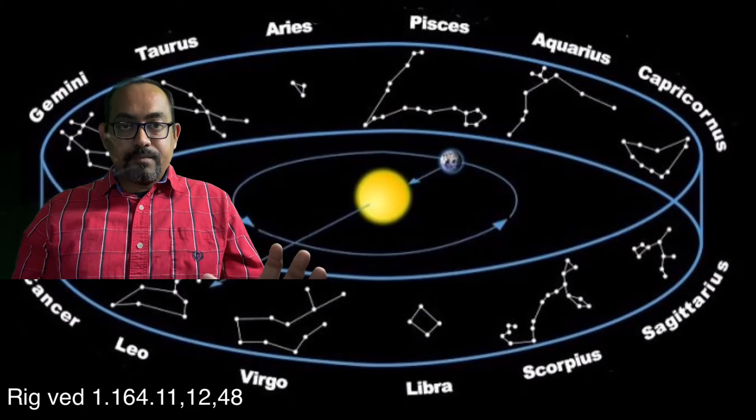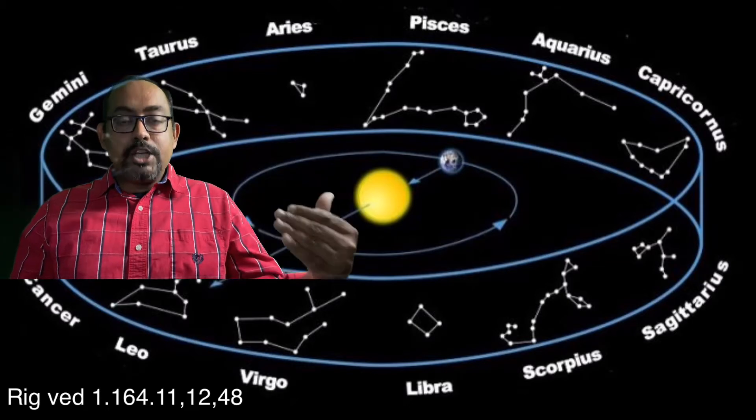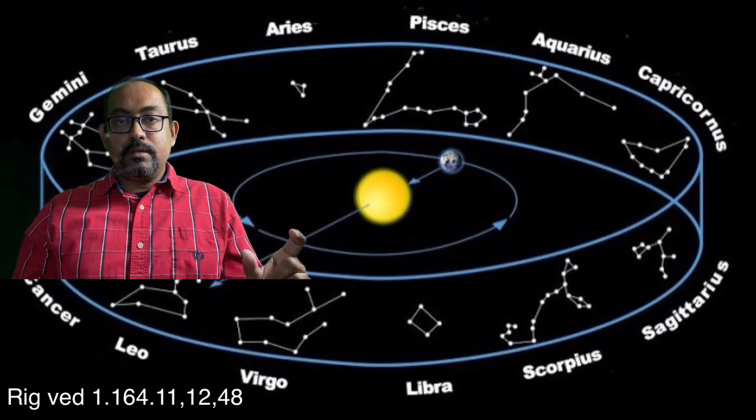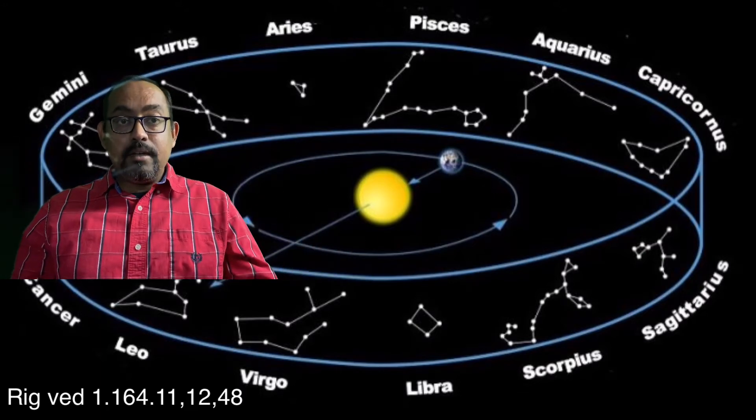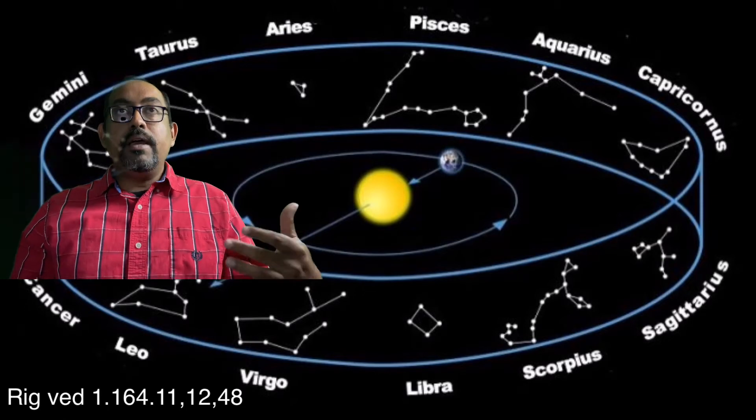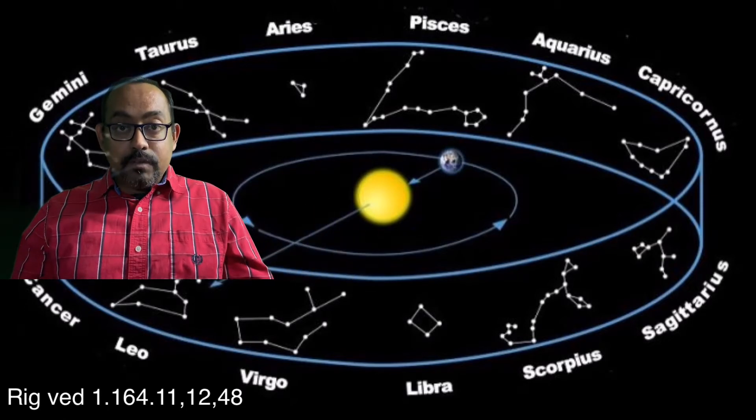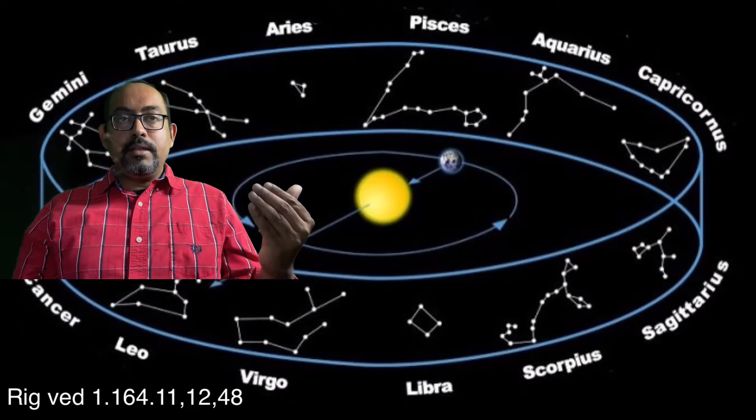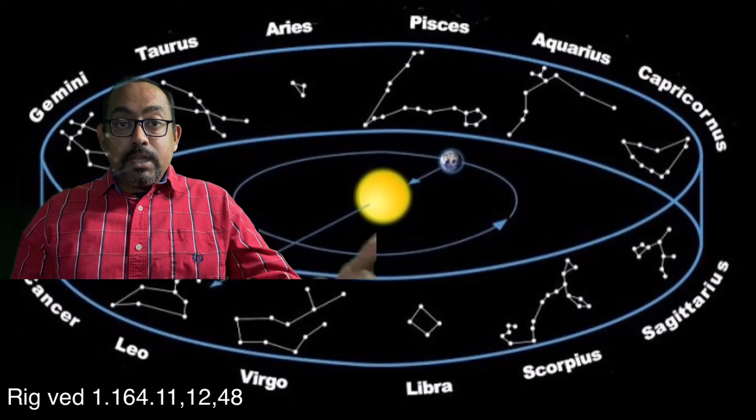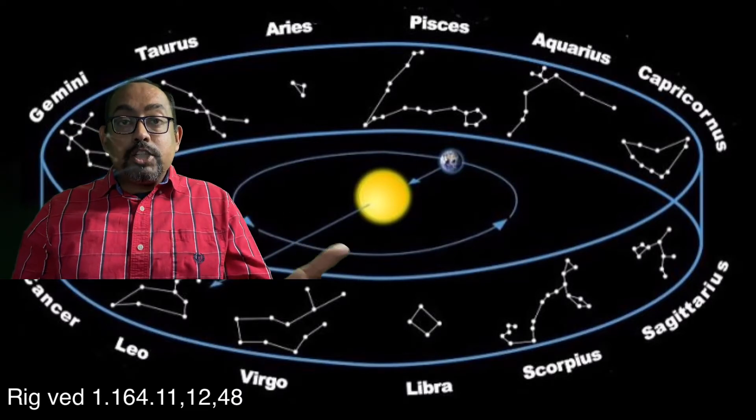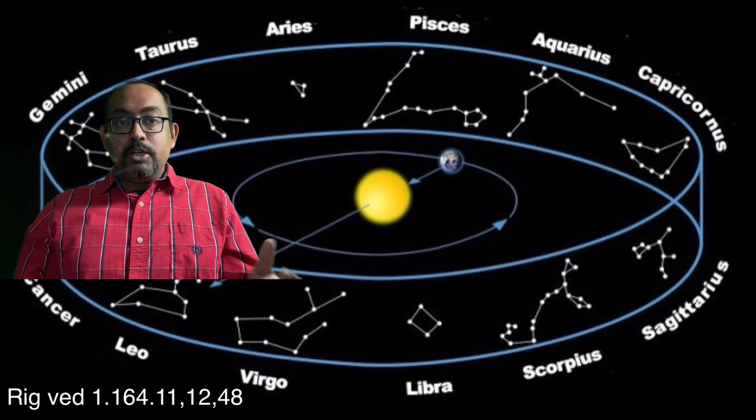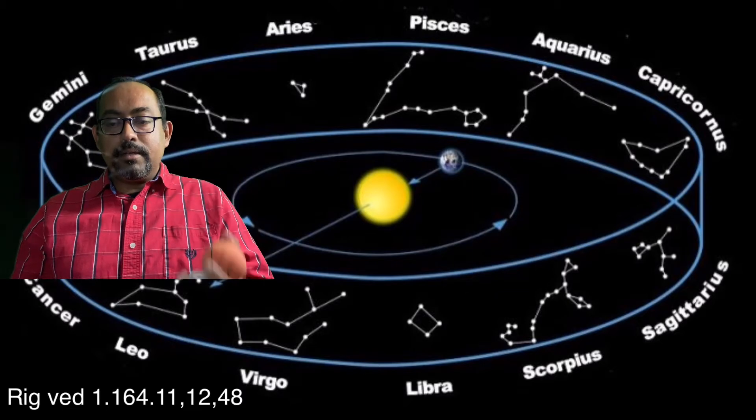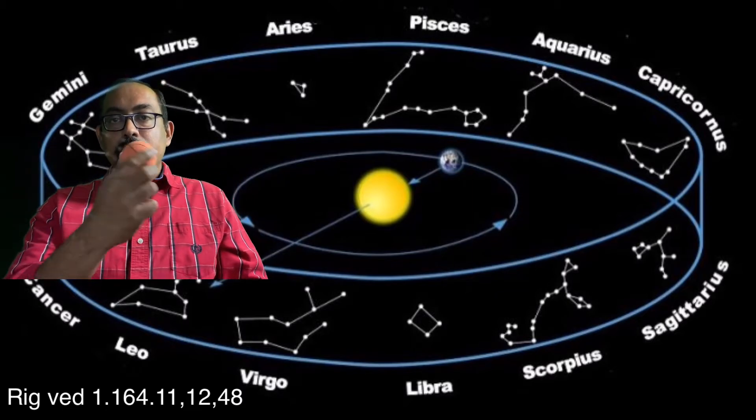When we say Dvadasharam, we are saying 12 spokes, divided into twelve. Na is not indeed. Then Tath is it, Jarayah means for decay. Then Varvarti means to go round, there is a root to go round. So if you consider this as an earth, to go around. Then you have chakram which is nothing but the wheel here.